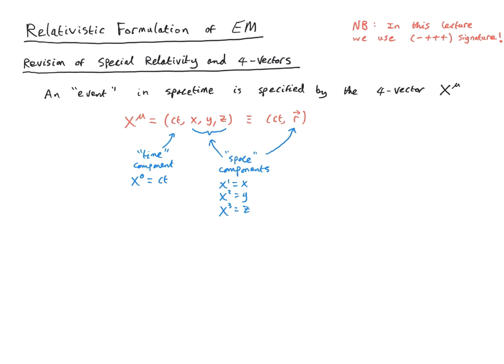Notice that the time component is multiplied by the speed of light. This is essentially a unit choice — we want all components of the four vector to have the same units. We choose the speed of light because there is a symmetry connecting the space and time components: the Lorentz symmetry. Using anything other than c would be like measuring x in meters and y in feet. We want to choose units on the same footing for all four components of our four vector.